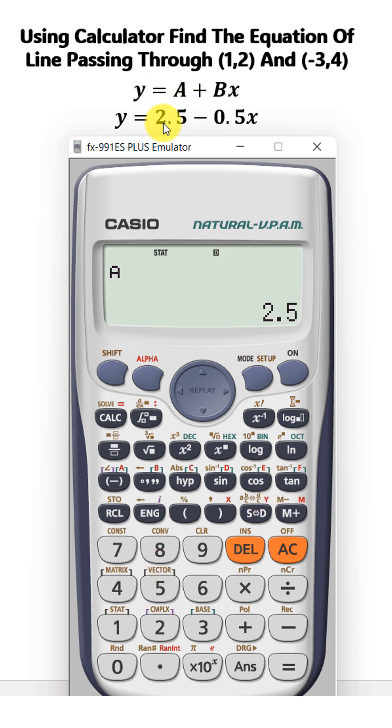Now the A value, the y-intercept, is 2.5. Again, shift, 1, 5 for regression, and we want to find the B value.